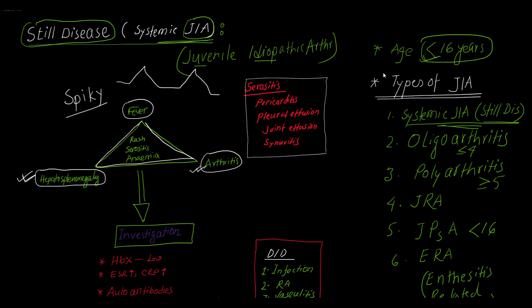Besides these three findings, there are another three findings. Number one, the rash, known as Salmon Pink rash, which is very rare — keep in mind the patient may present with this rash. Number two, serositis — inflammation of serous membranes, including pericardium causing pericarditis, pleural membrane causing pleuritis with pleural effusion, and synovial membrane causing joint effusion and synovitis.